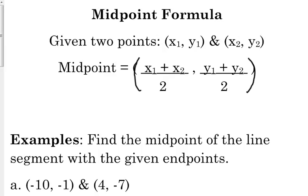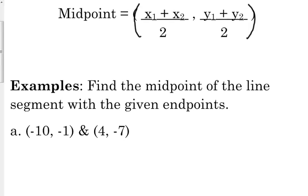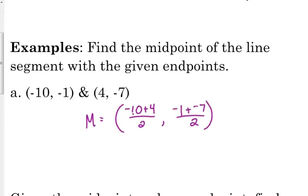Let's find the midpoint of the line segment with the given endpoints. So let's say that our endpoints are negative ten, negative one, and four, negative seven. So it really truly is as easy as adding together negative ten and four and dividing by two. Adding together negative one and negative seven and dividing by two. Now hopefully you can do this by hand. You don't have to rely upon your calculator. Negative ten plus four is negative six. Divided by two is negative three. Negative one plus negative seven is negative eight. Divided by two is negative four. That is the midpoint.